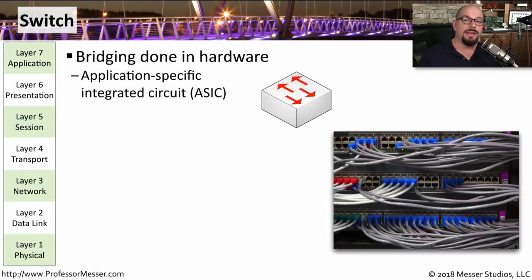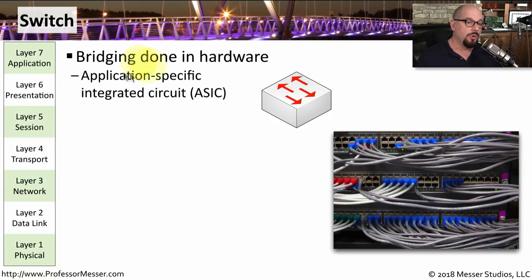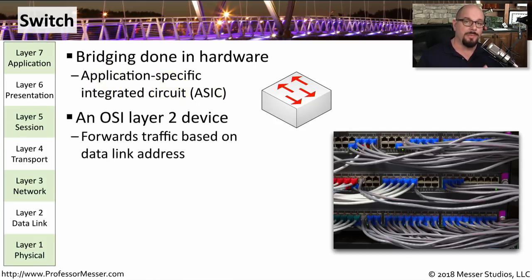Our modern switches are an evolution from the older style bridges. Now we have devices with hundreds of interfaces rather than the two or four you might have on a traditional bridge. Also, a traditional bridge made all of its forwarding decisions in software. On today's switches, we make all of these decisions in hardware using a technology known as ASICs, or application-specific integrated circuits. The forwarding decisions are exactly the same — we look at the destination MAC address and forward the frame depending on where that MAC address needs to go.